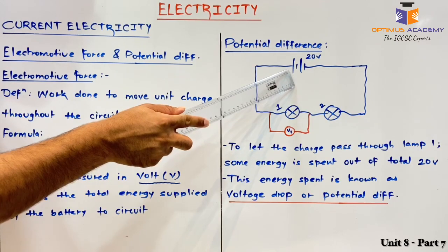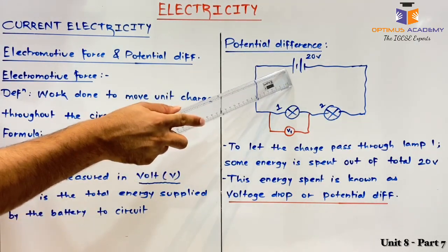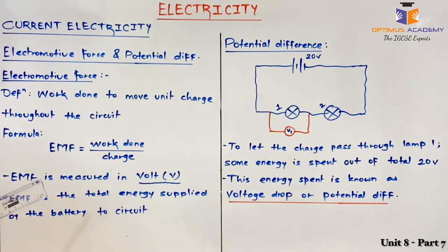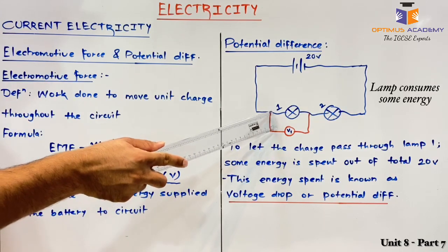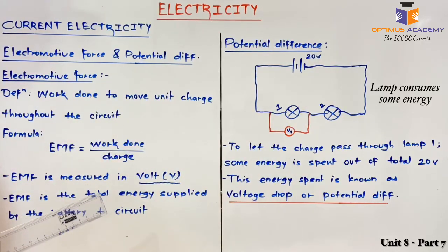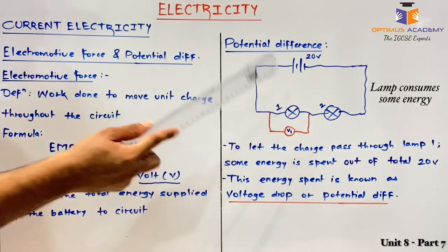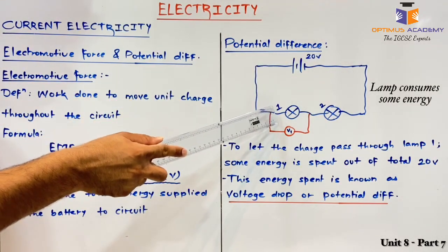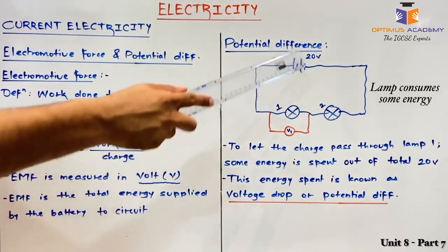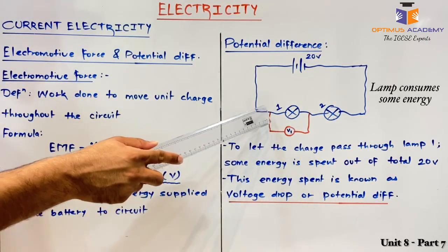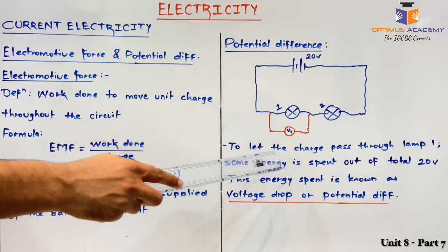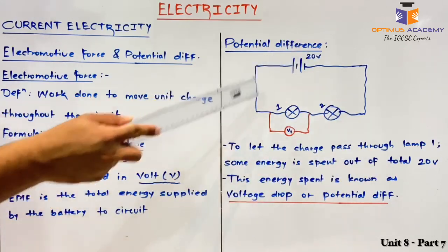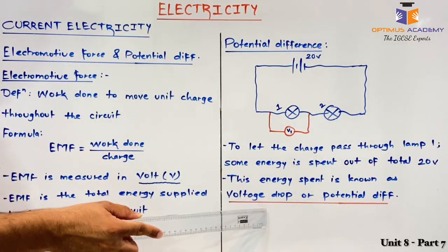The battery has voltage 20 volt and so the battery provides energy of 20 volt throughout the circuit. This energy will be utilized or spent at different points in the circuit. Suppose this 20 volt energy starts moving from the positive terminal and reaches the first lamp shown in the circuit. To cross this lamp, some energy is spent. You can understand this by an easy example — suppose you are standing here and there is a pothole. You have to jump the pothole, so you will be spending some energy. Similarly, electrical energy spends some energy to pass through the lamp, and that energy spent is known as potential difference — also called voltage drop.